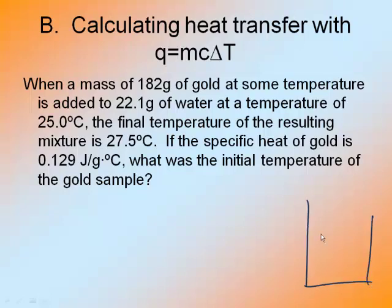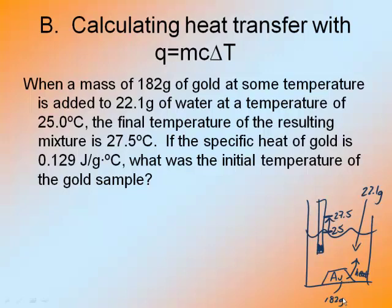So again I'm going to make myself a little drawing. You do not need the drawing if you don't want it. Let's make my gold look like a gold brick. So I have my thermometer in my water, and the temperature of my water is going from 25 up to 27.5. So my water gained heat, which means the heat came out of my gold and went into the water. Now this time I know that the mass of my water is 22.1 grams, and the mass of my gold is 182 grams.